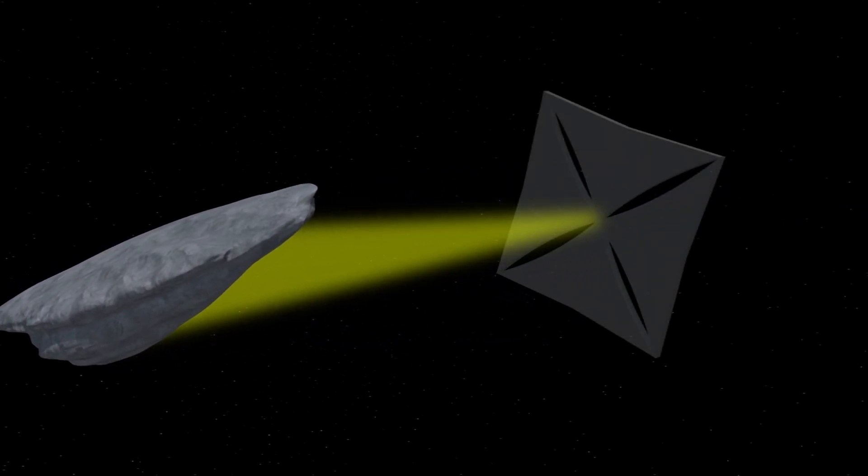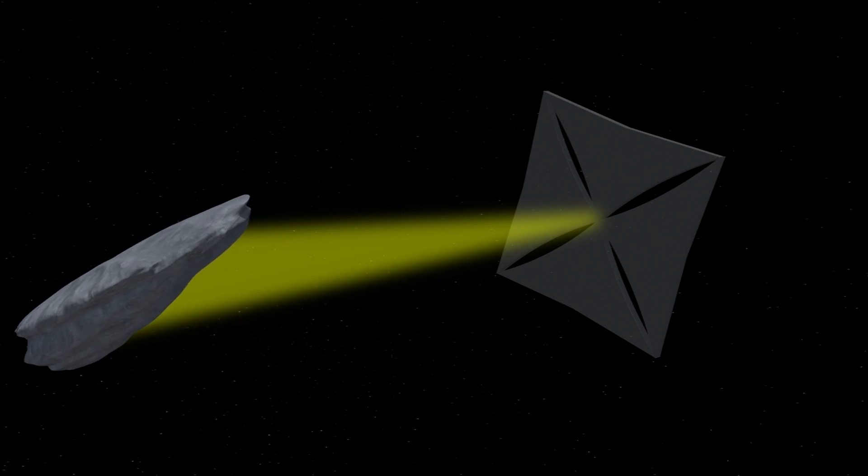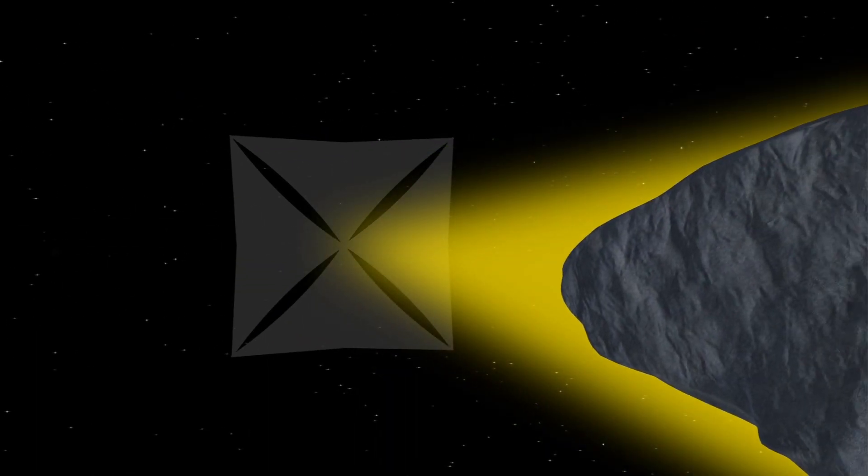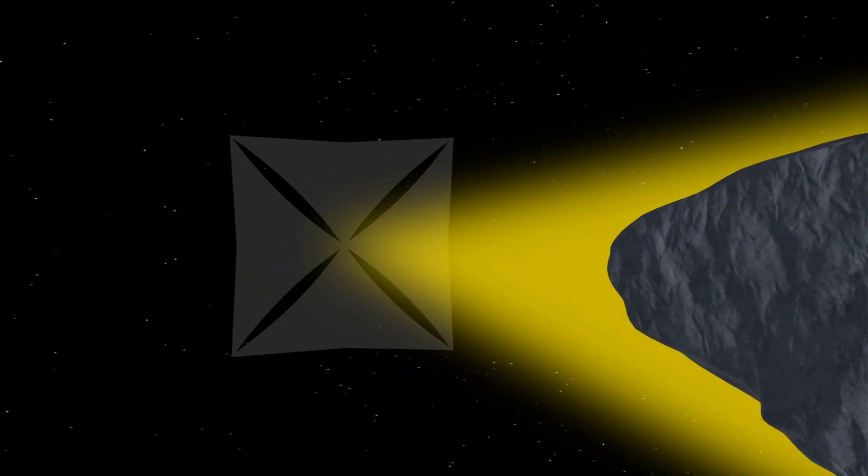They theorize Oumuamua might be using a light sail to travel. This technology uses light to propel objects through space. The researchers write that it could be used to transport cargo between planets or stars.